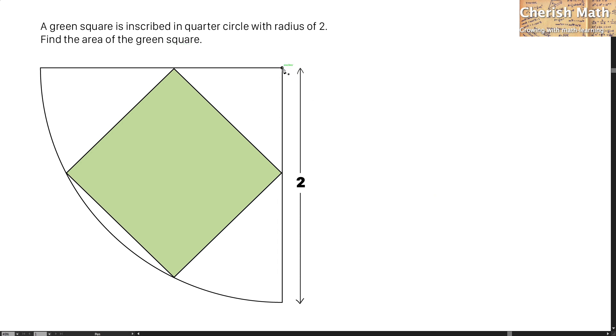In the first step, I'm going to connect a line from the center of the quarter circle, and this line serves as the bisector of this quarter circle and the bisector of the green square.